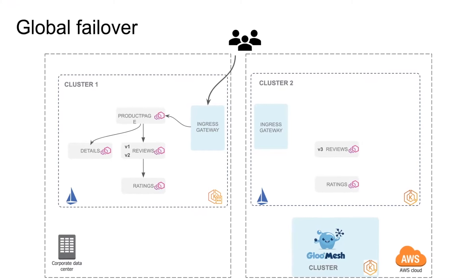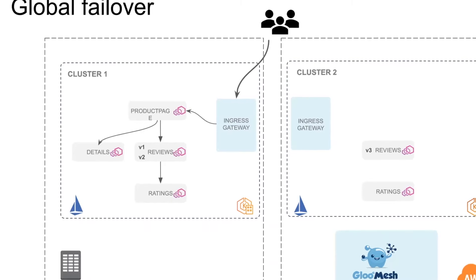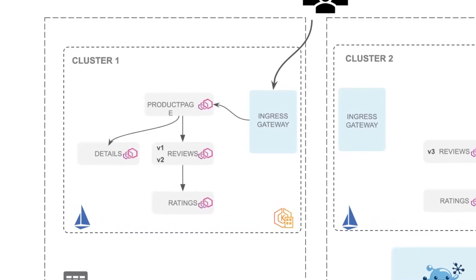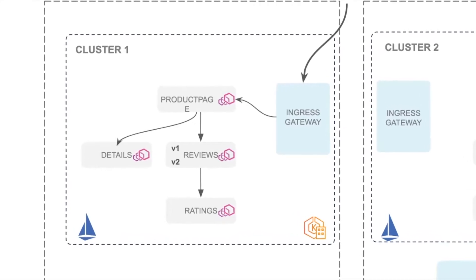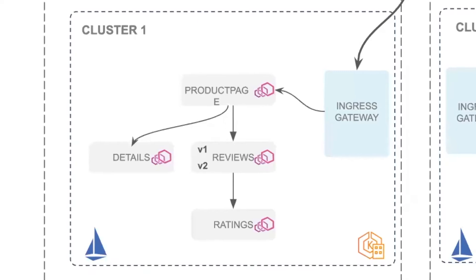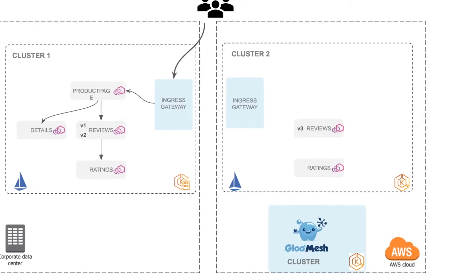In this demo today, I have three clusters. Cluster 1 is running on the corporate data center in EKS Anywhere. In this cluster, I have Istio running, the famous Bookinfo application along with Istio Ingress Gateway. For the review service, I only have review version 1 and review version 2. I also have two clusters running in AWS public cloud. Cluster 2 running Istio and Istio Ingress Gateway, with review version 3 and the ratings application. Cluster 3 is the GlowMesh management cluster.